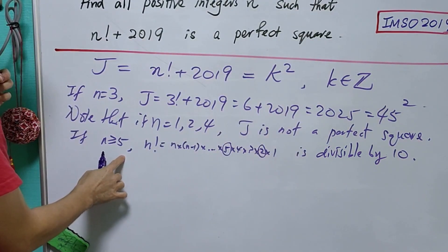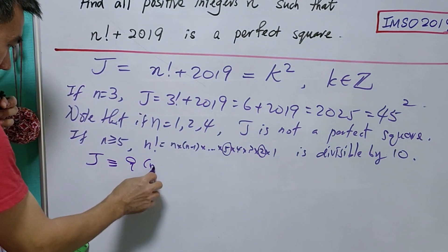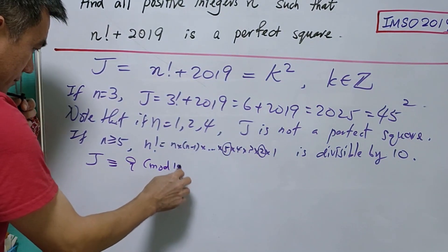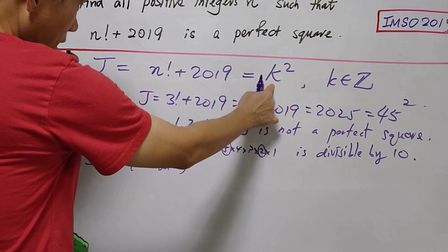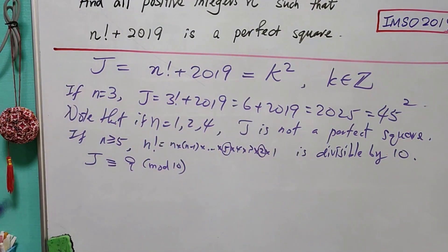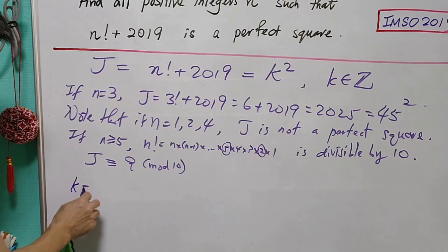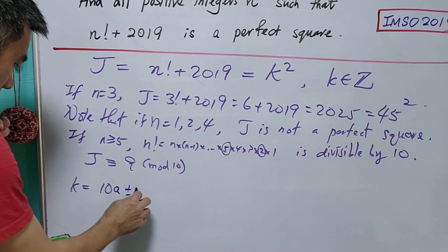If n ≥ 5, the last digit of j equals 9. If j is a perfect square and the last digit equals 9, then the last digit of k is either 3 or 7. So let's say j is a perfect square, then k has to be of the form 10a ± 3.